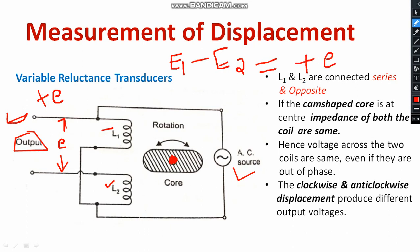If the cam-shaped core rotates in the anticlockwise direction, then calculating the difference between E1 and E2 gives negative E. The voltage magnitude is negative.